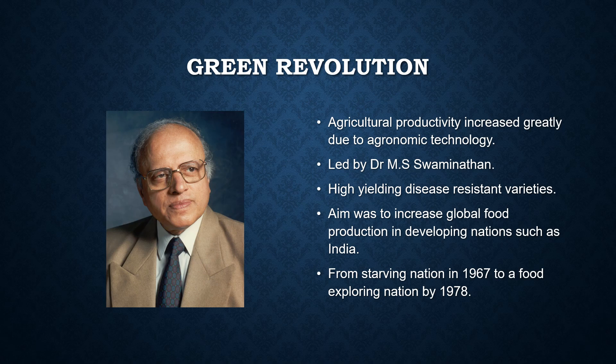So what is the green revolution? It refers to a series of research and development work in the field of agriculture. It started from 1940 and was completed in 1960. The main aim was to greatly increase agricultural productivity through agronomic technologies, with the goal of increasing food production.